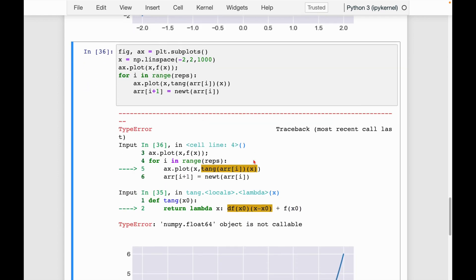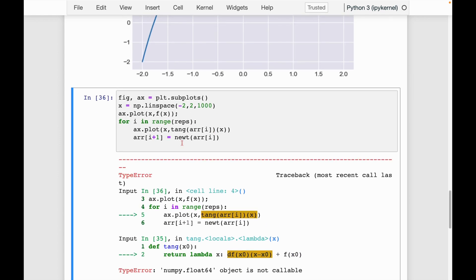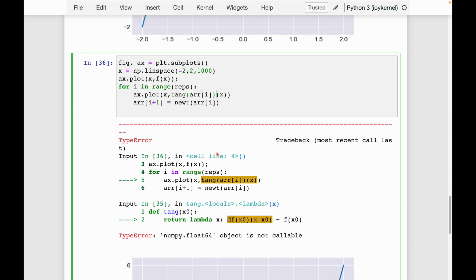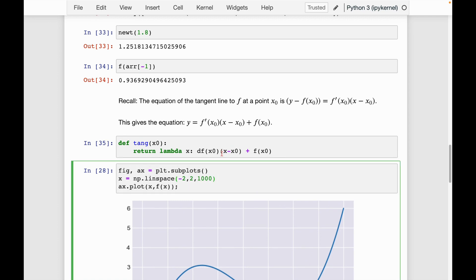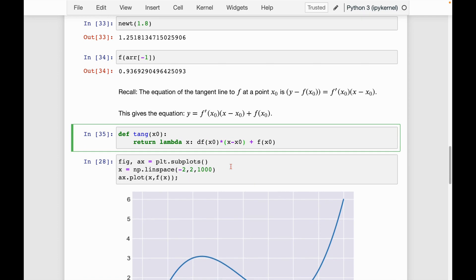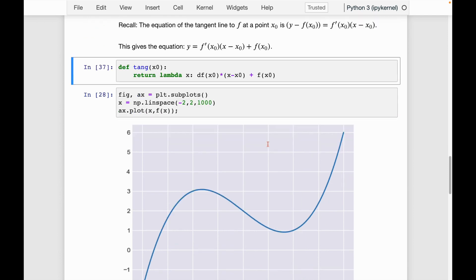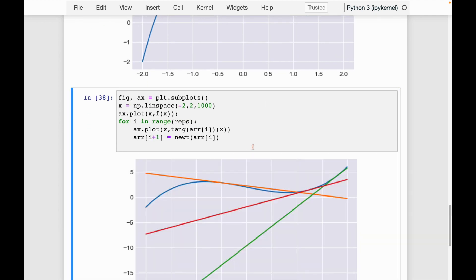So let's run this and see what happens. And it's not happy with something. So I'm probably off by parentheses somewhere. So tangent arr of i. So this is the x point that we want to plot. And then tangent returns a function, so we want to evaluate it at x. So let's see, what's it not happy with? Oh, I see. If we go back to our tangent function, it should be multiplication here. So that's what's going on. So I'm going to rerun this.